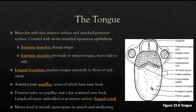The lingual frenulum is the mucous membrane connection between the tongue and the floor of the oral cavity. On the anterior surface of the tongue we can see structures called papillae, most of which contain taste buds that allow sensation of sweet, sour, and so forth. Posteriorly there are no papillae, just a few scattered taste buds. We also have the lingual tonsil, made up of lymphoid tissue, which serves as a surveillance area for pathogens moving into the GI tract.